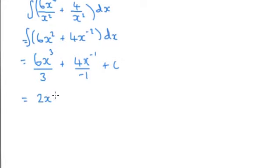to become 2x cubed minus 4x to the minus 1 plus C. Or, if we get rid of the index notation, which I think looks better, we would write 2x cubed minus 4 over x plus C.